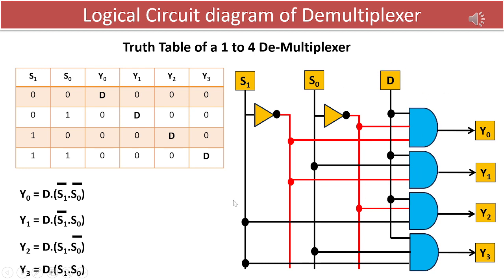In summary, within this lecture, we've examined the operation of a 1 to 4 D multiplexer and its construction utilizing fundamental logic gates. I trust that this lecture has provided you with valuable insights into the functionality of data distributors, commonly referred to as demultiplexers.